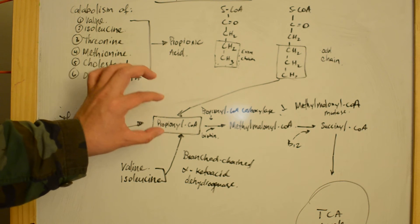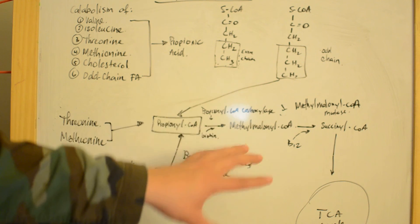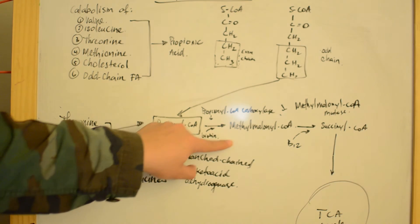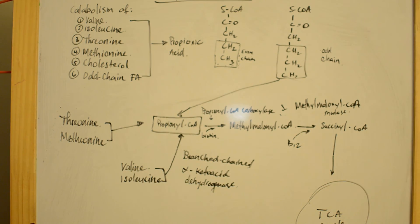All of these propionyl-CoA molecules are converted into methylmalonyl-CoA with the help of propionyl-CoA carboxylase, using biotin as a cofactor, because all carboxylases use biotin as a cofactor.